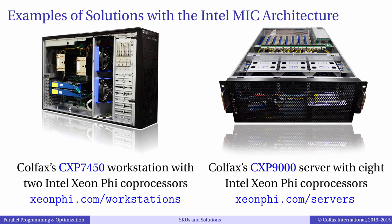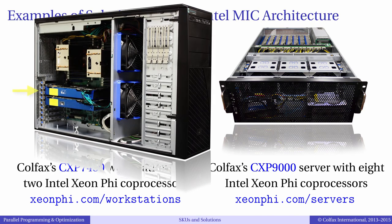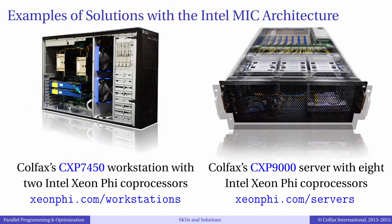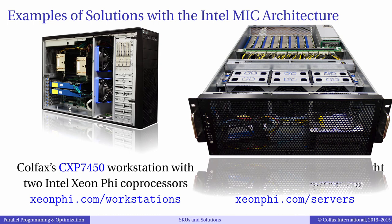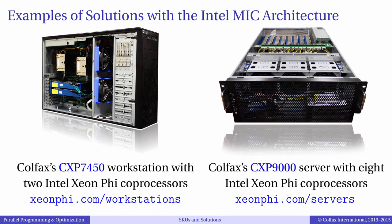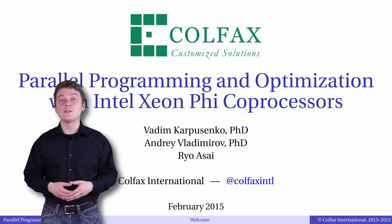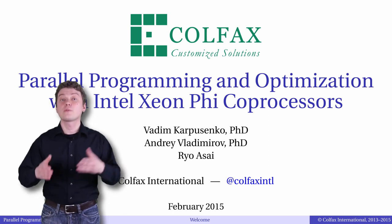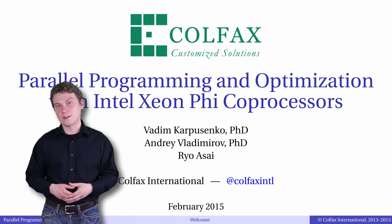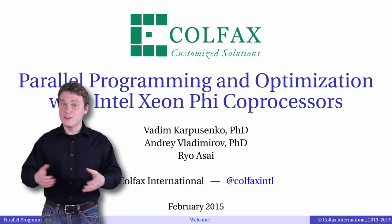Here are two examples of system configurations built by Colfax International that utilize Intel Xeon Phi Co-Processors. A workstation may be equipped with one or more active-cooled co-processors — in some configurations up to 4. A server may be equipped with passively cooled co-processors, and systems are available with 8 co-processors per system. Those systems are available from Colfax International on the XeonPhi.com website. In the next section, we will start the discussion of Intel MIC architecture details from the programmer's perspective, followed by an overview of vector instructions. Thank you for tuning in, and I hope to see you in the next episode.